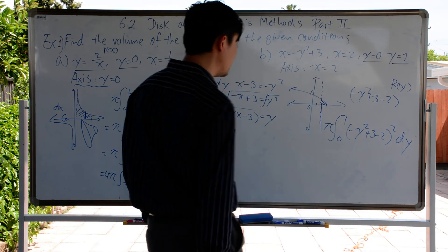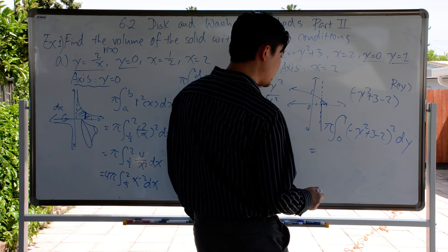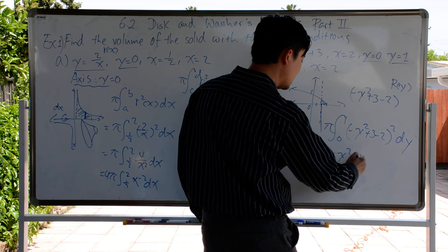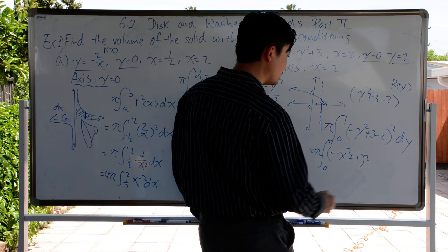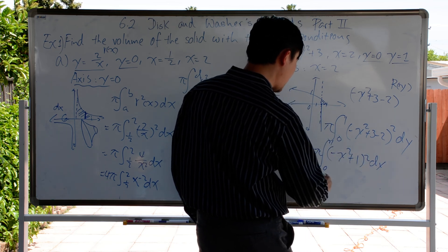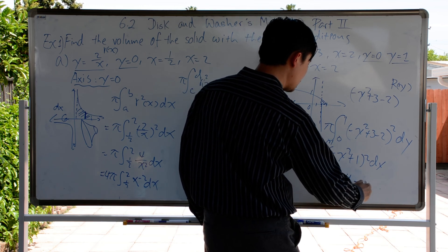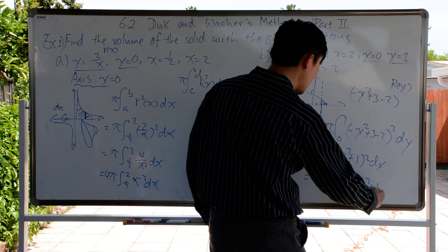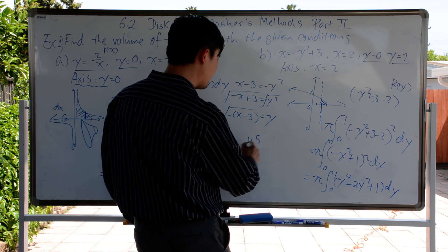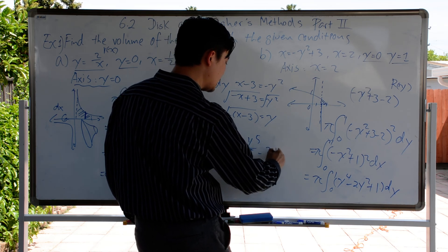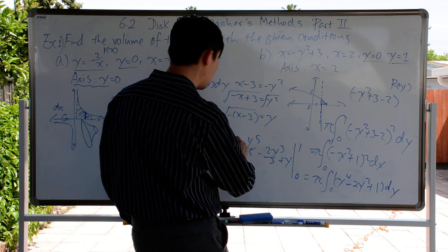So we can simplify: negative y squared plus 1, quantity squared, with pi as outside coefficient, from 0 to 1, dy. Expanding it, we get pi times the integral from 0 to 1 of y to the power of 4 minus 2y squared plus 1, dy. Integrating: y to the power of 5 over 5, minus 2y cubed over 3, plus y, from 0 to 1. Don't forget about the pi.